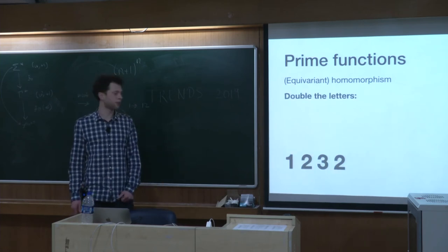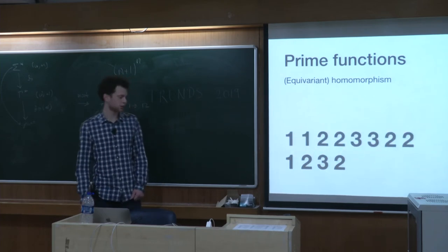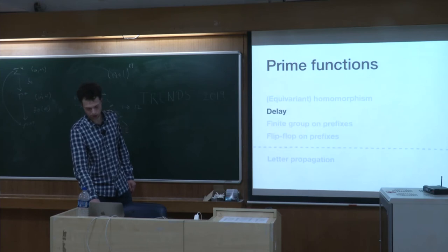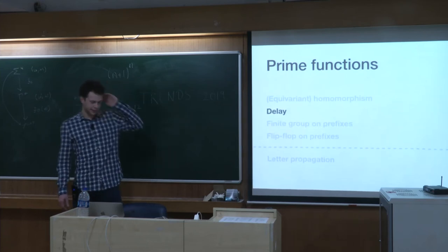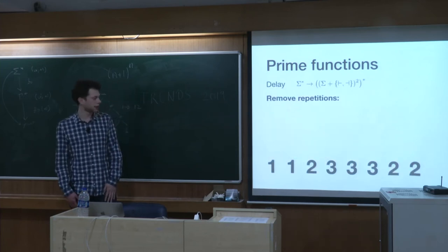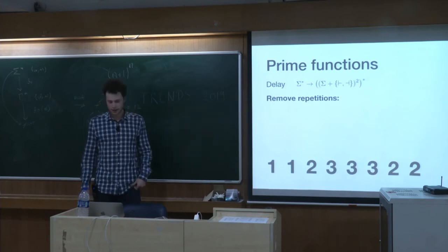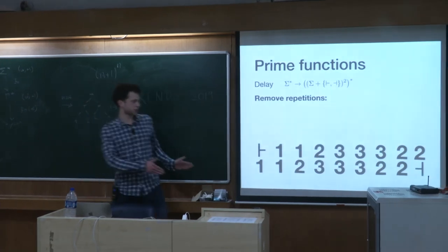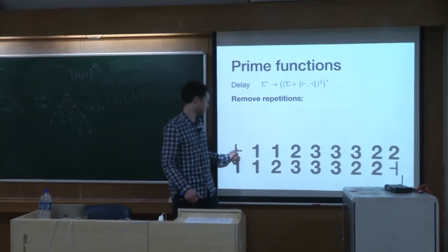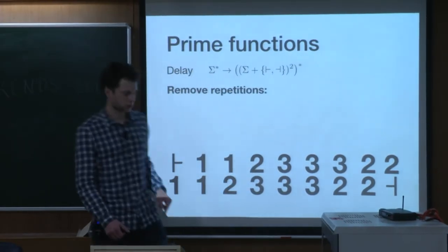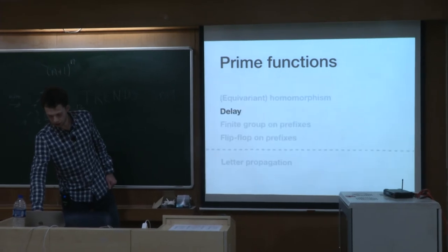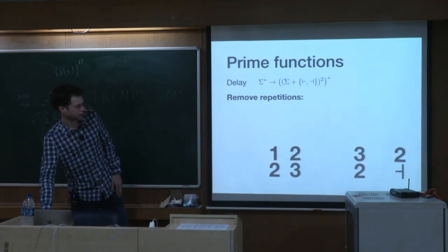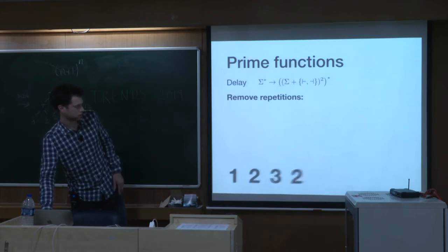An example of a function that is a homomorphism is just doubling the letters — we translate one atom, like 'one' to 'one one,' 'two' to 'two two,' and this is how we double all the letters. Another prime function is the delay function, and it can be used, for example, to do the example we did before: removing all the repeating atoms. What it does is move the word forward and create begin-of-word and end-of-word marks, and then with the homomorphism we can filter out all the equal pairs and keep only the top row. That is the function.